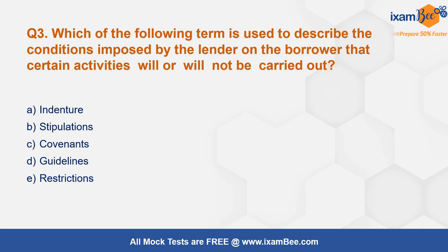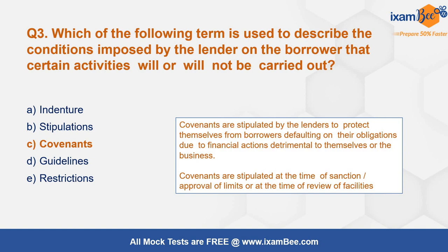Third question: which of the following terms is used to describe conditions imposed by the lender on the borrower that certain activities will or will not be carried out? The correct answer is covenants. Covenants are stipulated by lenders at the time of the sanction itself, before approving the limits. For example, there could be a financial covenant such as: your debt-to-equity ratio should remain less than two times. That is an example of a financial covenant which the lender gives at the time of sanction.